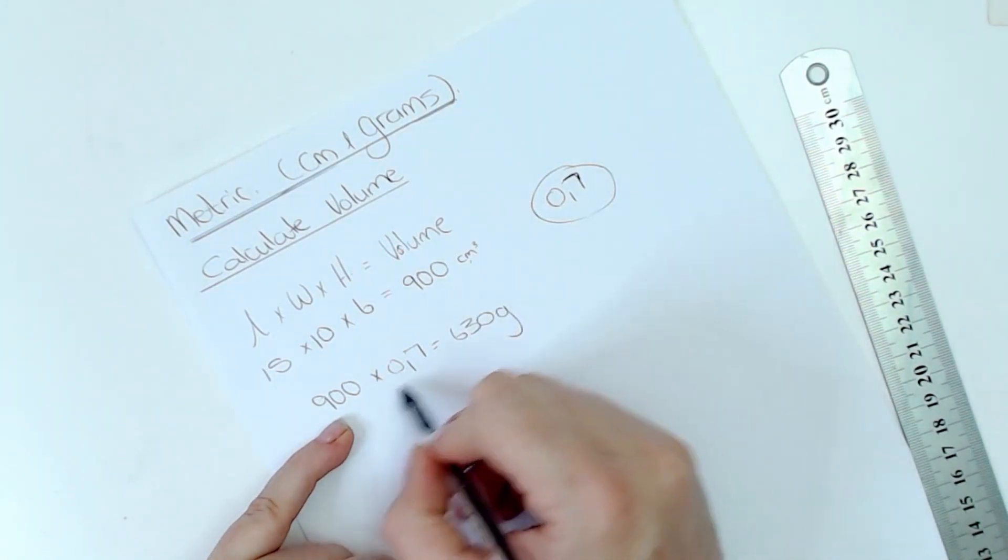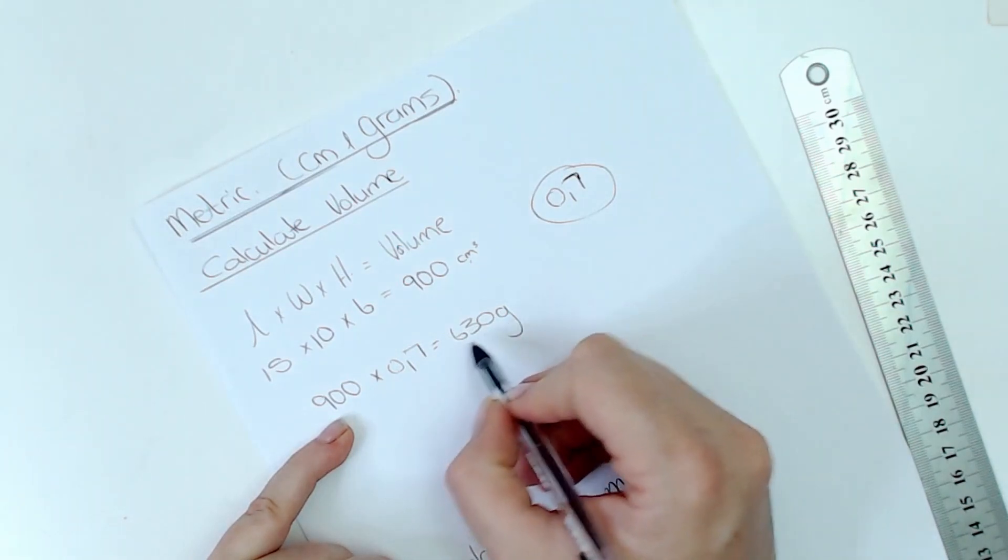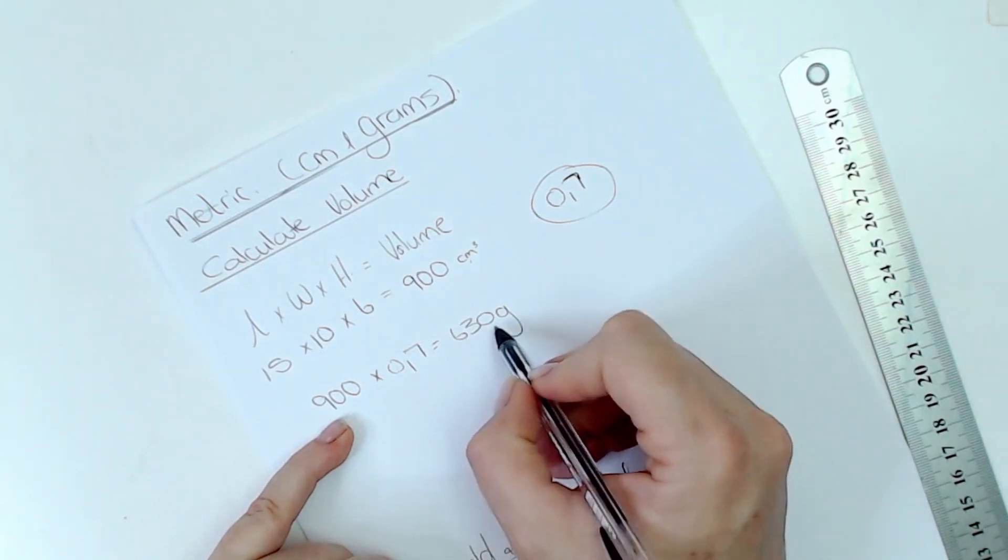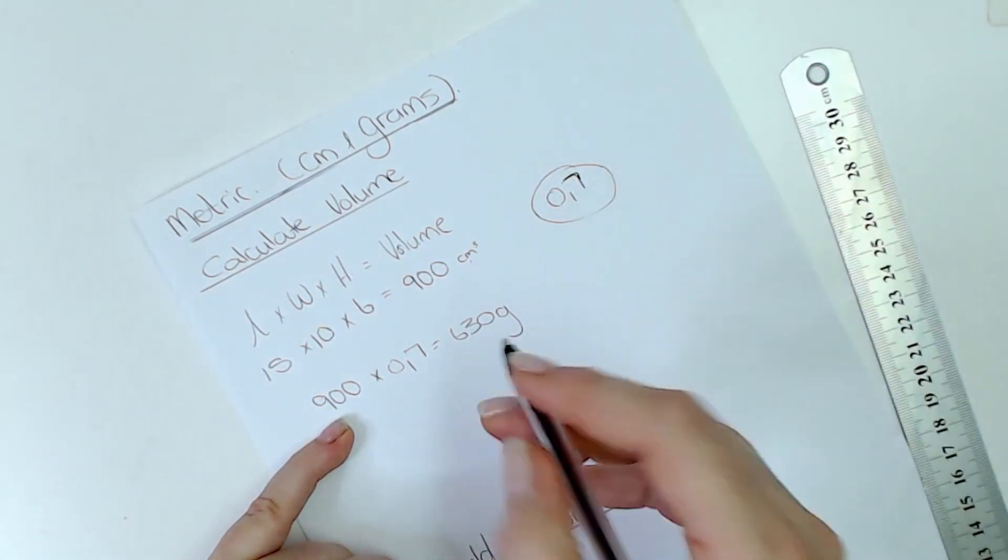Now remember always we're going to weigh our ingredients so we're going to weigh our oil out, so 630 grams and not 630 milliliters. So this is the amount of oil you need in your recipe to fill this specific mold.